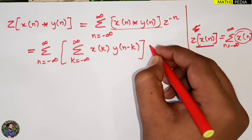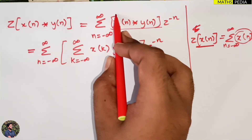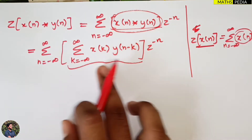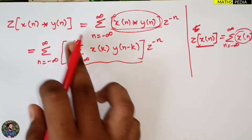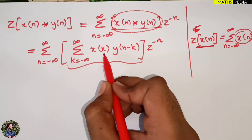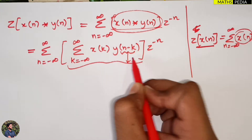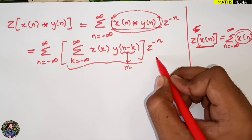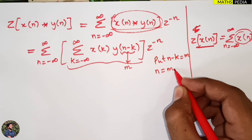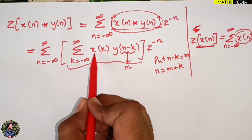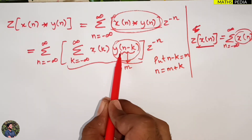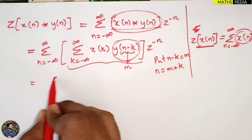So we have the summation from n = −∞ to ∞ of the summation from k = −∞ to ∞ of X(k)·Y(n−k)·Z^(−n). Now I'll rearrange the summations, taking the k-summation outside. So it becomes: summation over k of X(k), times the inner summation over n of Y(n−k)·Z^(−n).